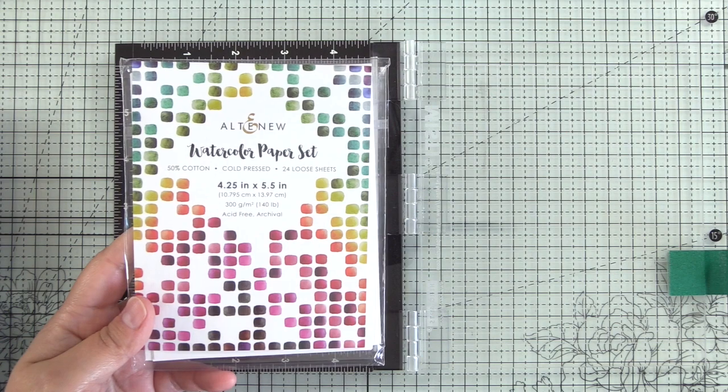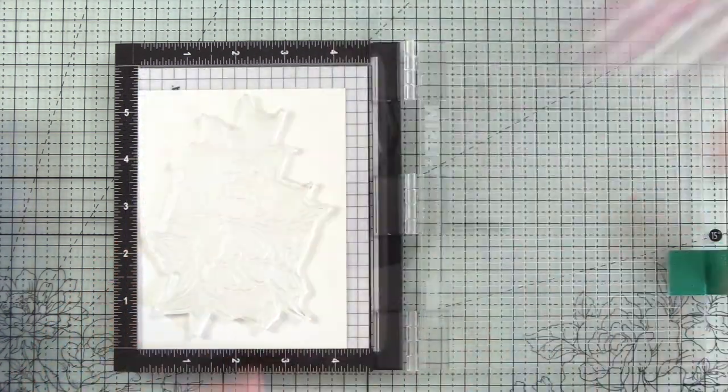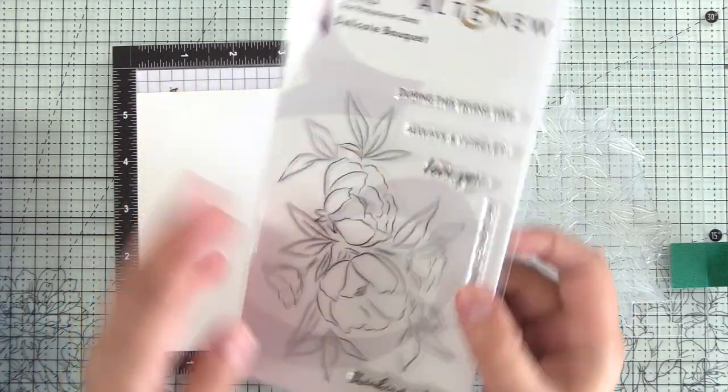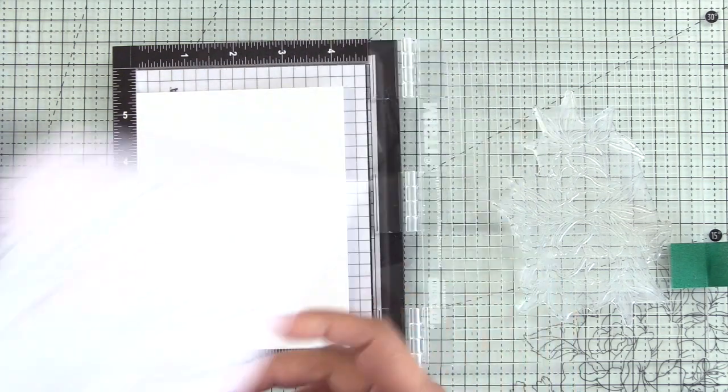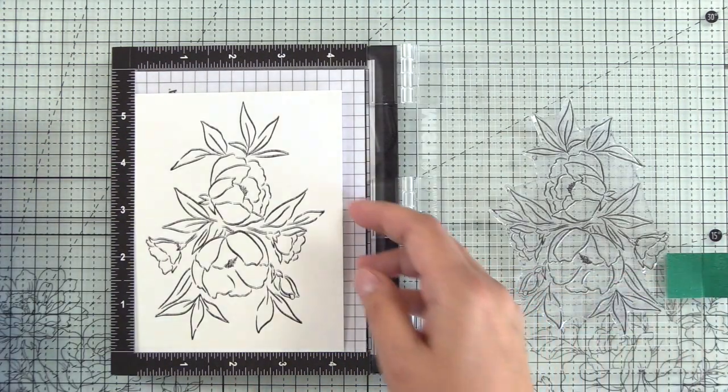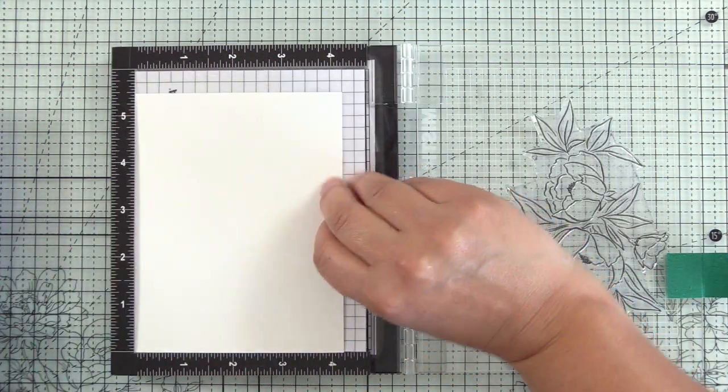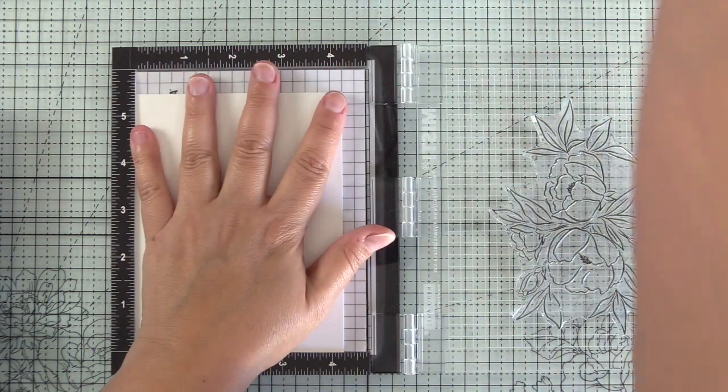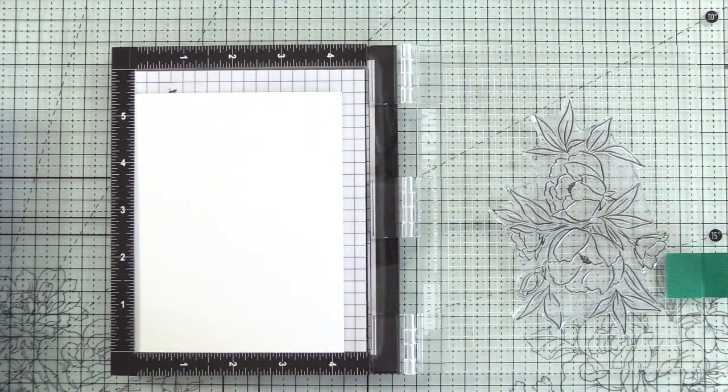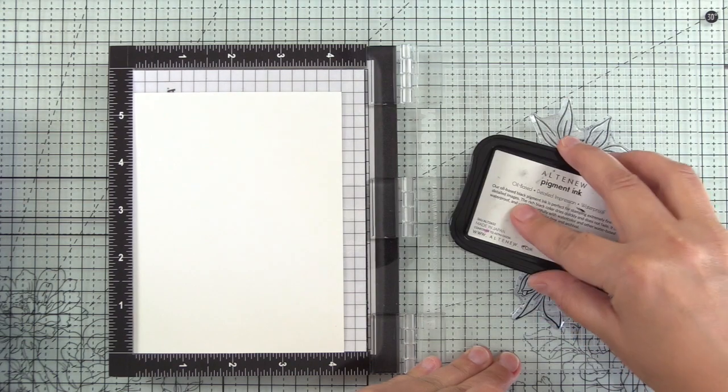I'm going to start off with a watercolor piece to add to my washi tape card. Here I have the watercolor paper set and delicate bouquet from Altenew. I'll have all of the supplies listed down below. I stamped this in obsidian pigment ink and accidentally double stamped it, so I'm just flipping it over and I'm going to stamp on the back.